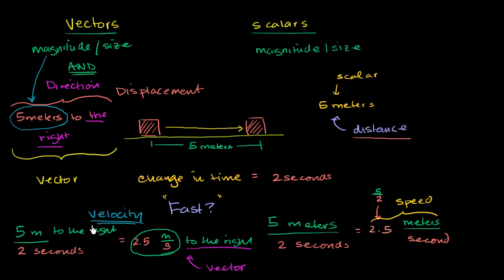Easy way to think about it: if you're thinking about change in position and you specify the direction, you're talking about displacement. If you don't give the direction, you're talking about distance. If you're talking about how fast something is going and you give the direction, you're talking about velocity. If you don't give the direction, you are talking about speed. In the next video, we're going to start working with these to solve some basic questions about how fast something is going, how far it might travel, or how long it might take to get somewhere.